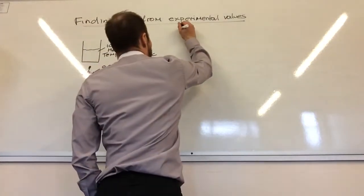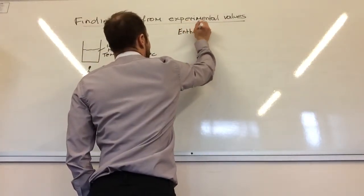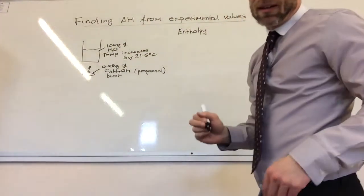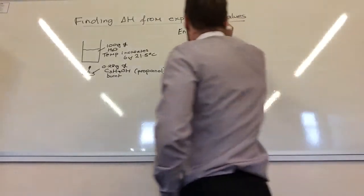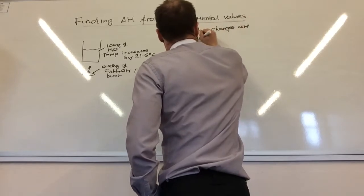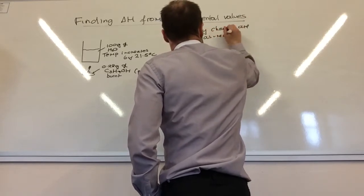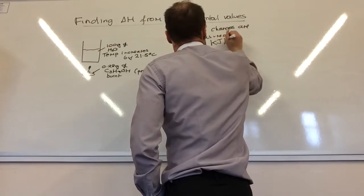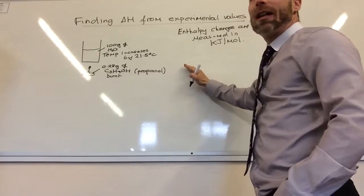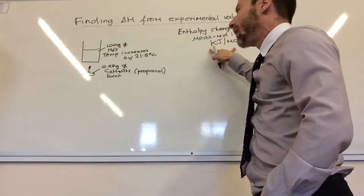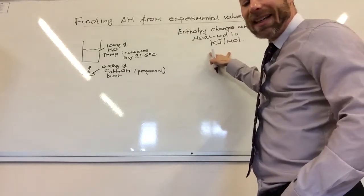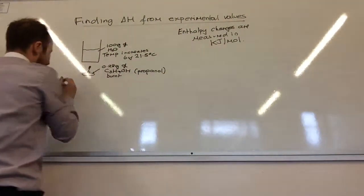Key things just to note is enthalpy changes are measured in kilojoules per mole. We need to find the enthalpy change in kilojoules per mole for that. There are three easy steps to do that. The first step, A, is calculate the energy transferred to the water.